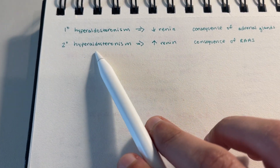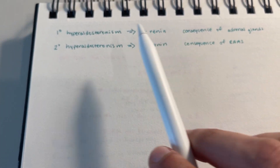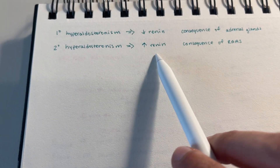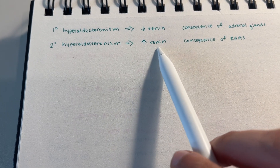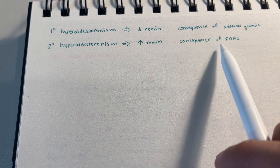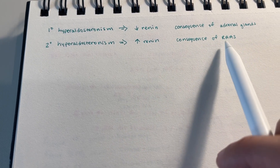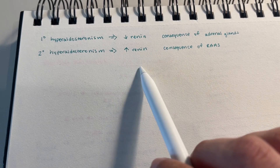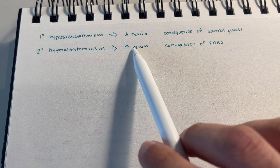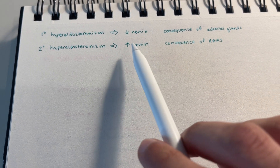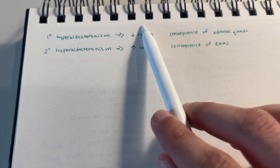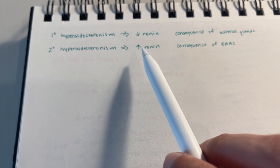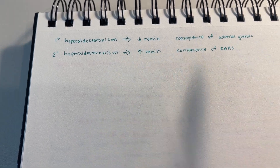So in secondary hyperaldosteronism, you're going to have a lot of aldosterone produced, but that's because you have a lot of renin produced due to something wrong with your renin-angiotensin-aldosterone system. Hopefully this makes sense in explaining the difference between primary and secondary hyperaldosteronism — why renin might be decreased in primary and why it might be increased in secondary.